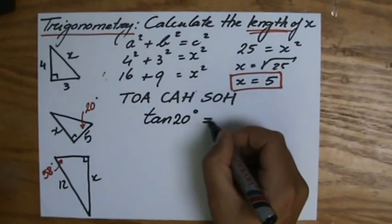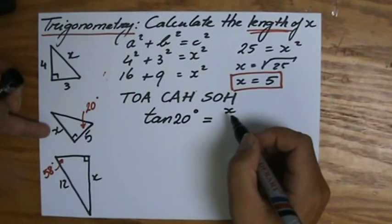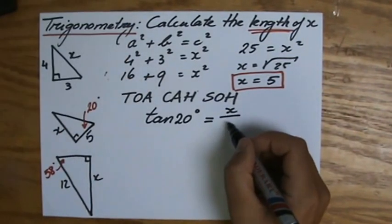So, I write down the tangent of 20 degrees. And that ratio is always immediately followed by your angle. 20 degrees. And that equals my opposite, x divided by my adjacent, 5.